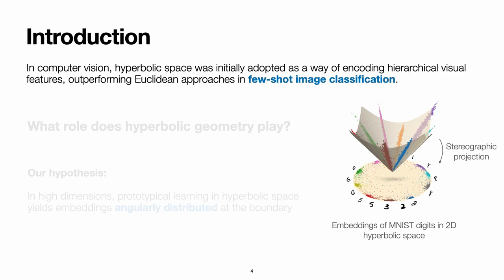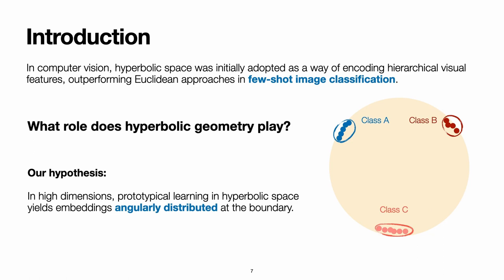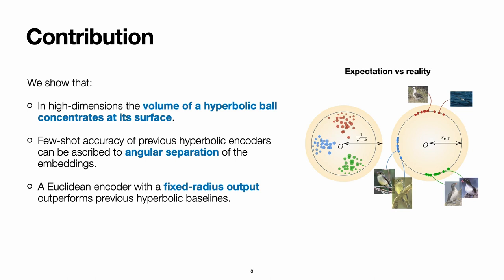Despite the good results produced in the literature thus far, it remains unclear the role that hyperbolic geometry plays. And in this paper, our hypothesis is that in high dimensions, prototypical learning in hyperbolic space actually produces embeddings that are angularly distributed, that is to say, at the same radius.